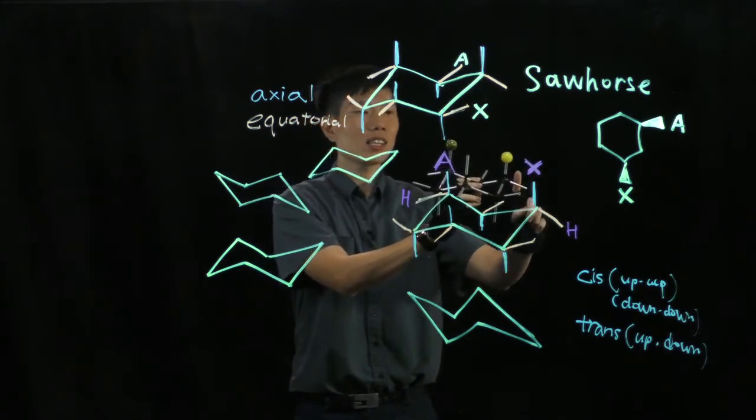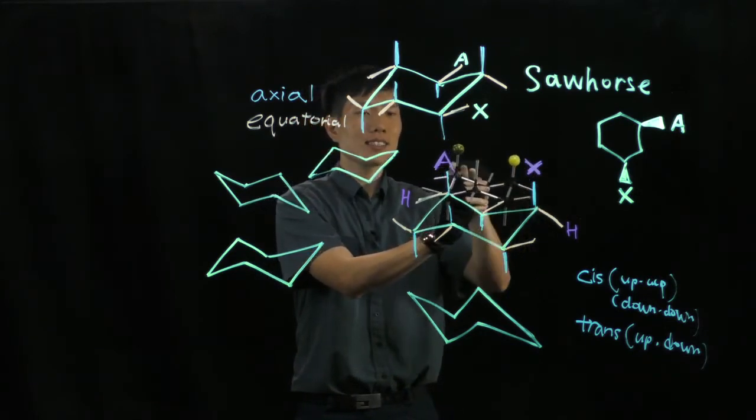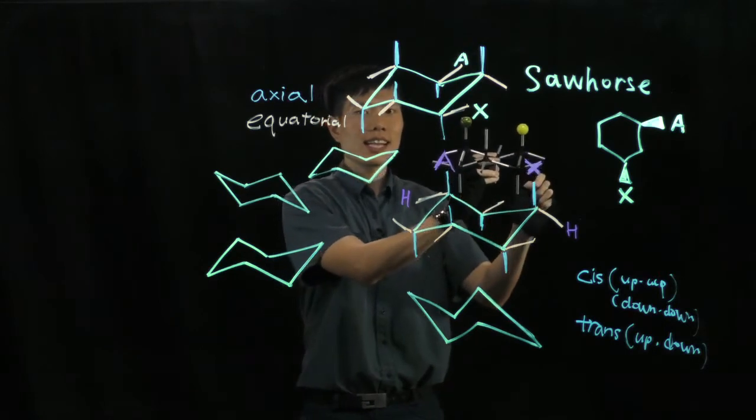You see here, the last carbon here points to the X, this one is an A. And now, let's do the ring flip.